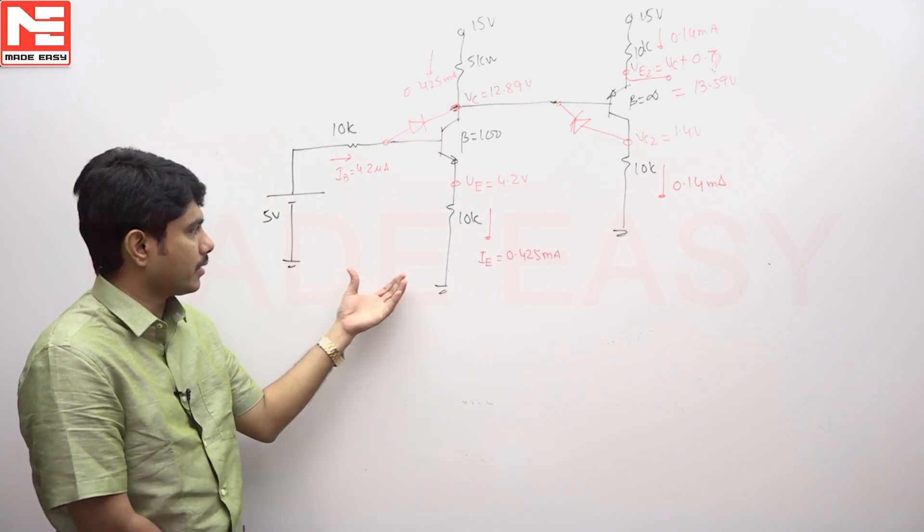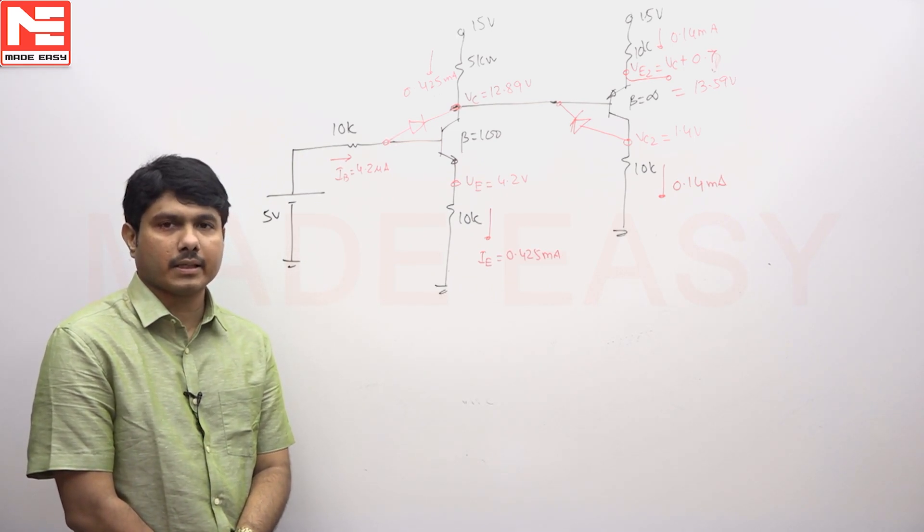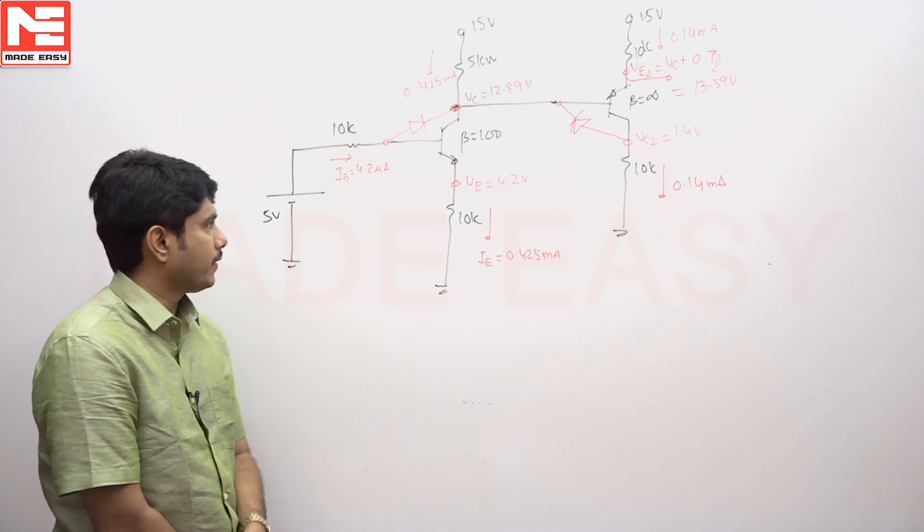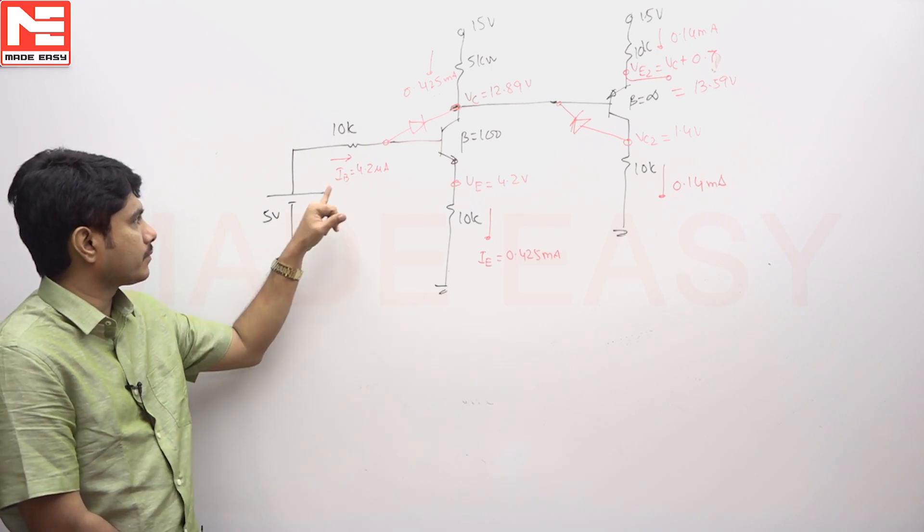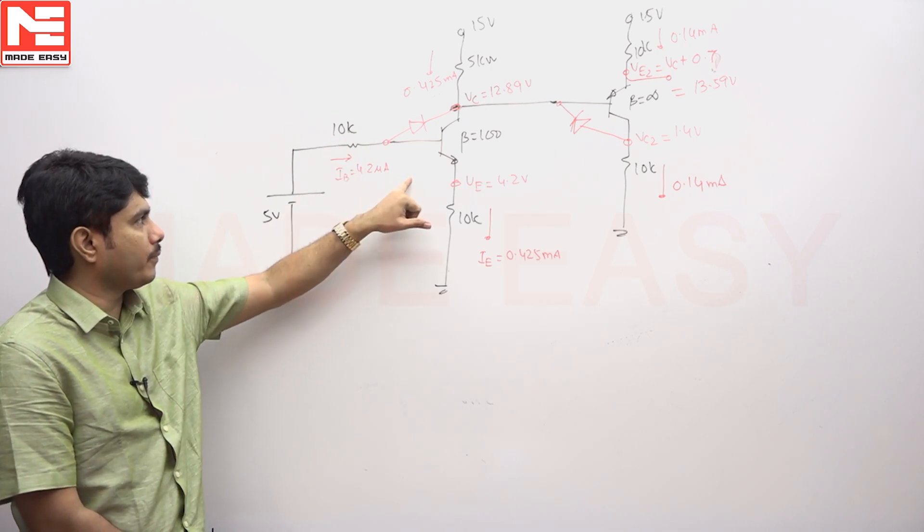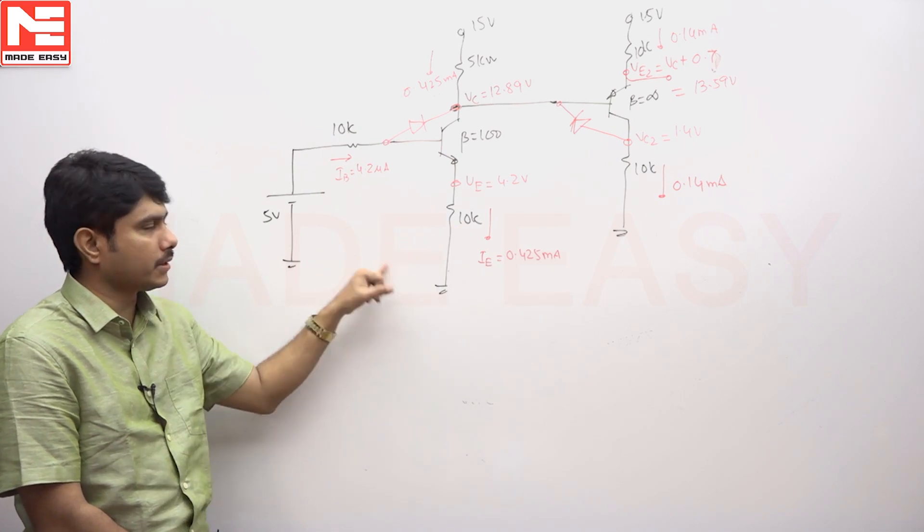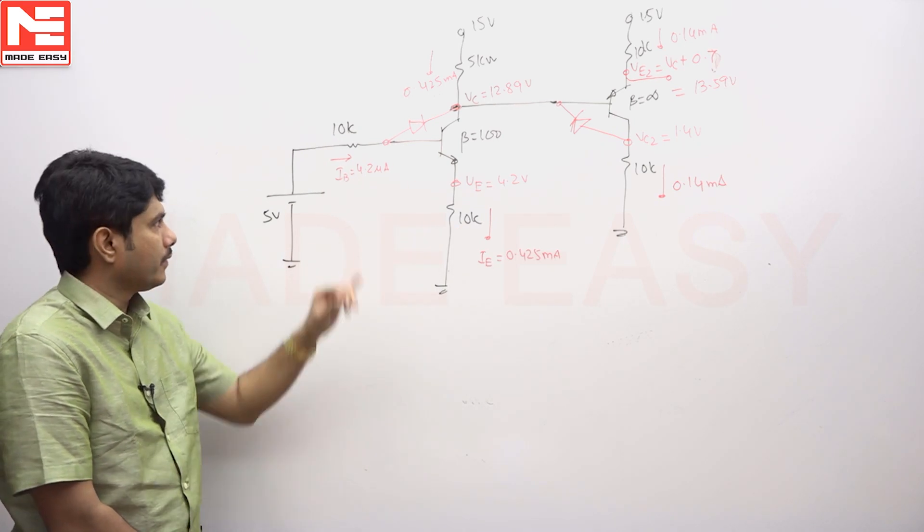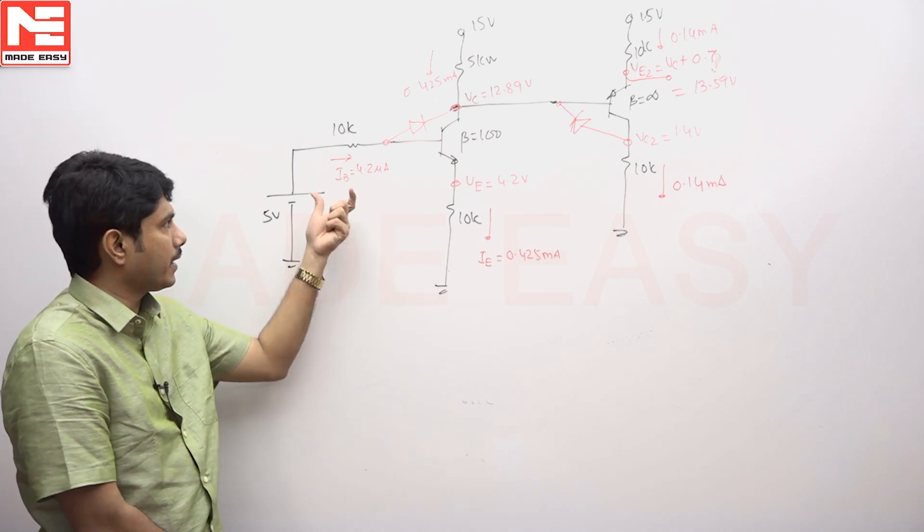First, we have to find out whether this transistor is working under active region or in saturation. For that, I applied a simple loop equation: 5 minus IB into 10k minus 0.7 plus (1 plus beta) times 10k. Using this loop equation, we get the IB current as 4.2 microamperes.